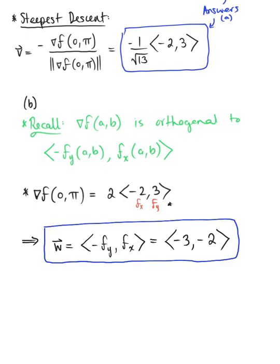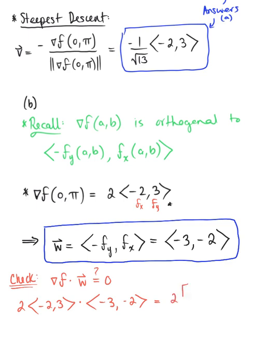Any scalar multiple of vector w will work, but before stating this as our final answer, we should check. We want to make sure the dot product of the gradient vector and vector w equals zero. We have 2 times the vector negative 2, 3, dotted with the vector negative 3, negative 2. Ignoring the scalar multiple, we get negative 2 times negative 3, which is positive 6, plus 3 times negative 2, which is negative 6. This equals zero, confirming that this is indeed a vector pointing in the direction of no change.